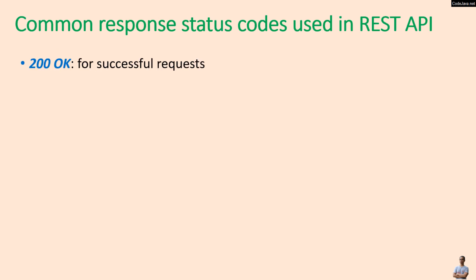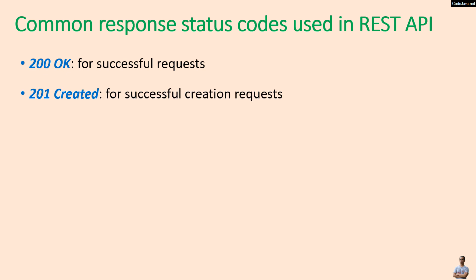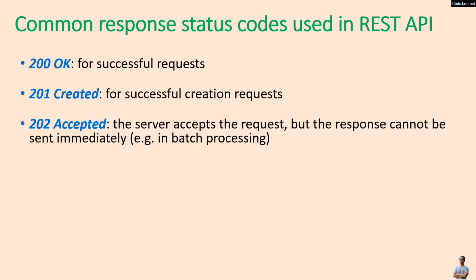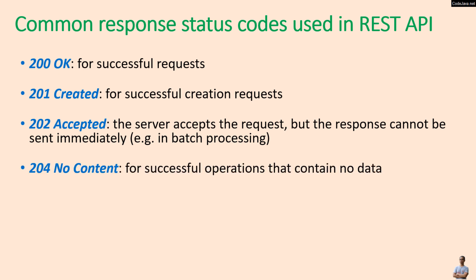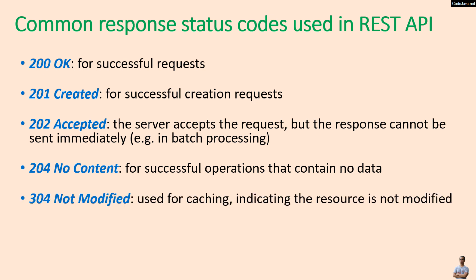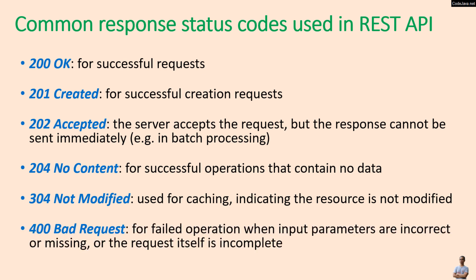Here are some common response status codes used in REST APIs: 200 OK for a successful request, 201 Created for a successful creation request, 202 Accepted indicating the server accepts the request but the response cannot be sent immediately (for example, in batch processing), 204 No Content for successful operations that contain no data, 304 Not Modified used for caching indicating the result is not modified, and 400 Bad Request for failed operations when input parameters are incorrect, missing, or the request is incomplete.